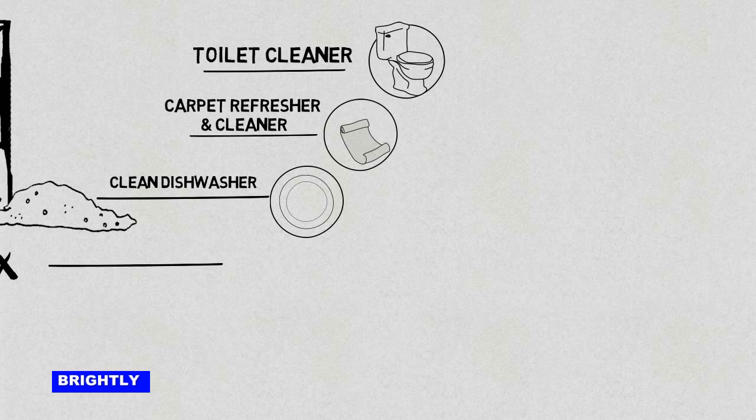4. Spray odor eliminator: Add 1 1/2 cups borax, 3 cups warm water, and 5 drops of your favorite essential oil to a spray bottle and use as an odor eliminator. You can spritz in the air like you would any air freshener, or spray on furniture, linens, or carpets.